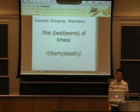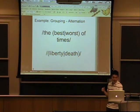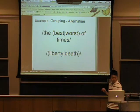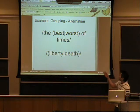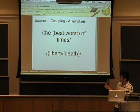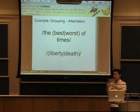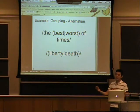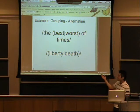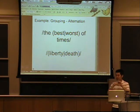These are examples of alternation. Within a group, we can say we want one thing or another thing. The alternation operator is the pipe. The first regular expression matches the string 'the best of times' or it will match 'the worst of times'. The second regular expression will match either 'liberty' or 'death'. One possible use is when a lot of people will match one string then another, all with the same program path — a regular expression offers a quick, concise way to accept all of these.